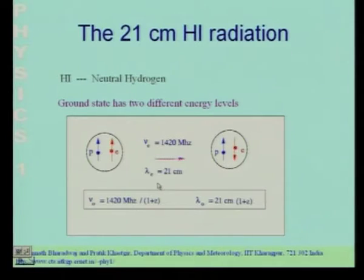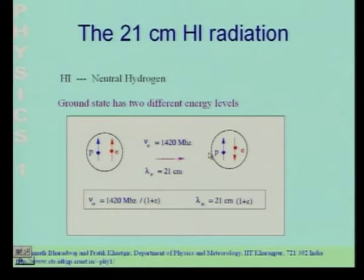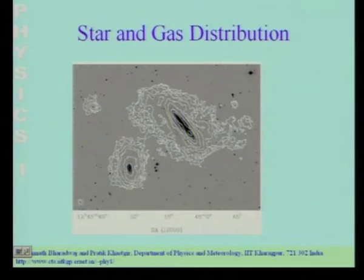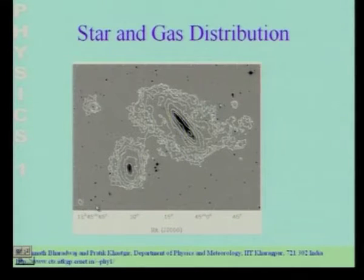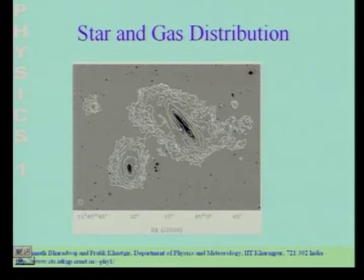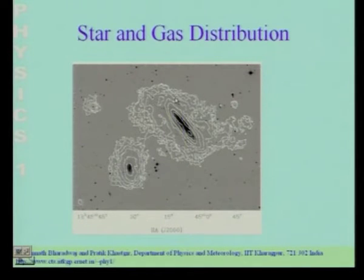Neutral hydrogen in the ground state emits radiation at 21 centimeters. This image shows a distant galaxy made using 21 cm radiation — a galaxy is a collection of stars and gas. The black regions show where the stars in the galaxies are, and the white contours show how neutral hydrogen is distributed, measured using the 21 centimeter radiation.